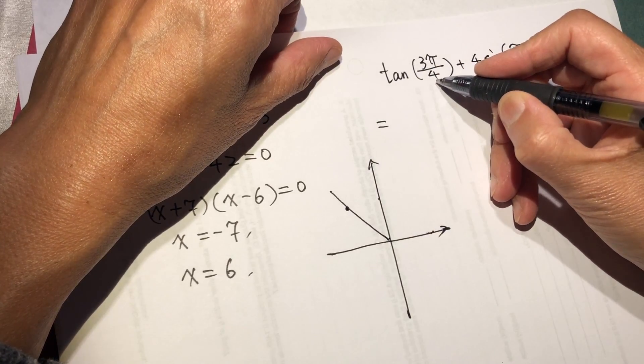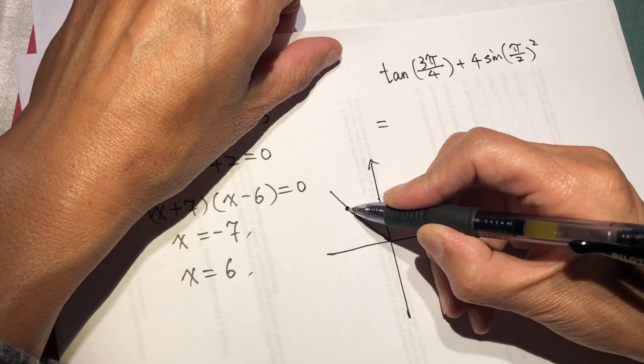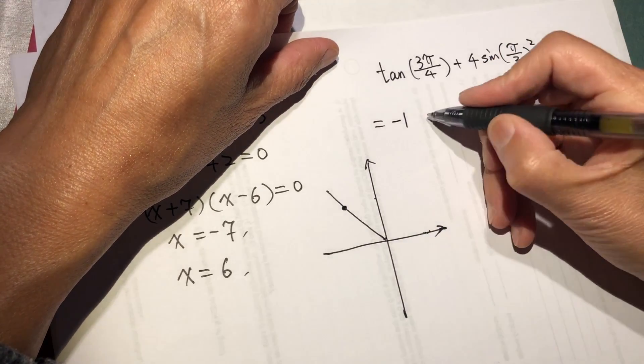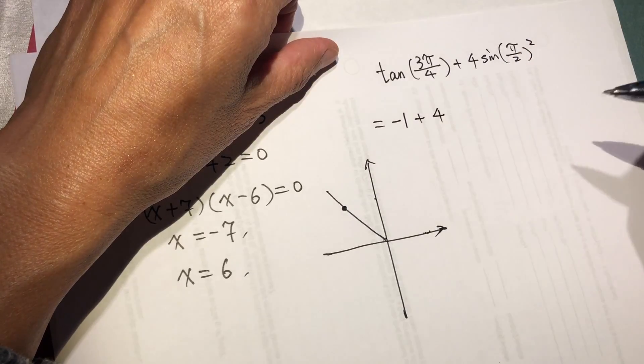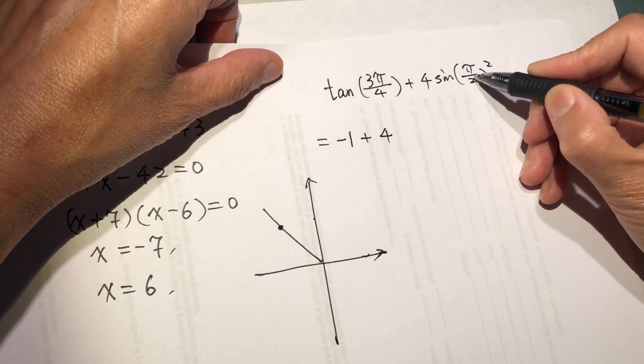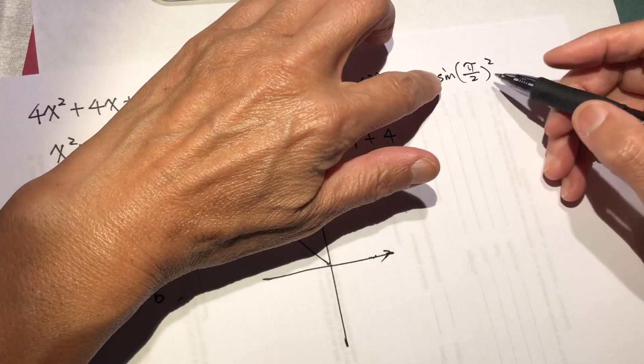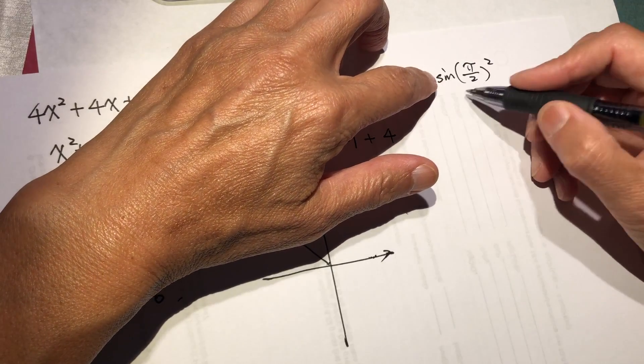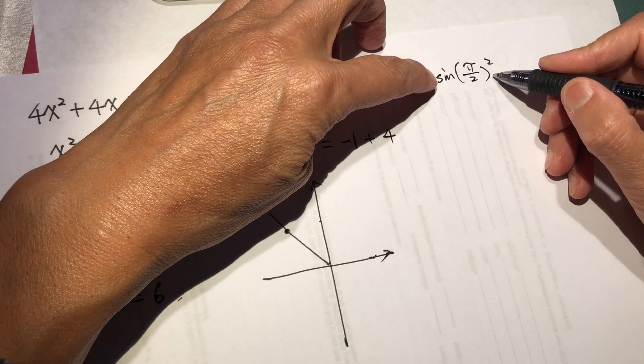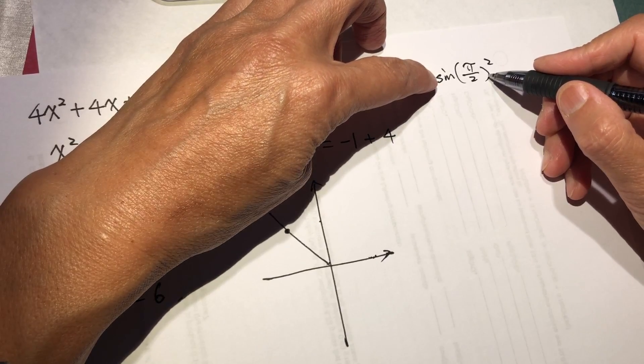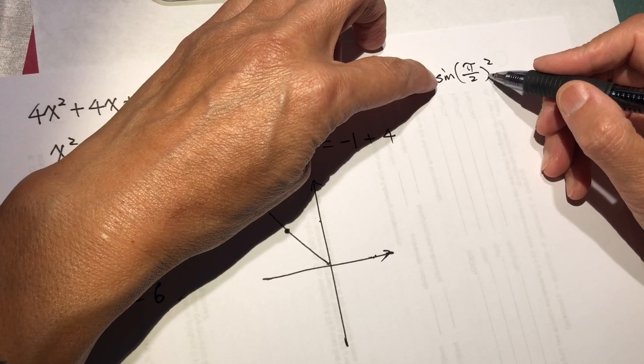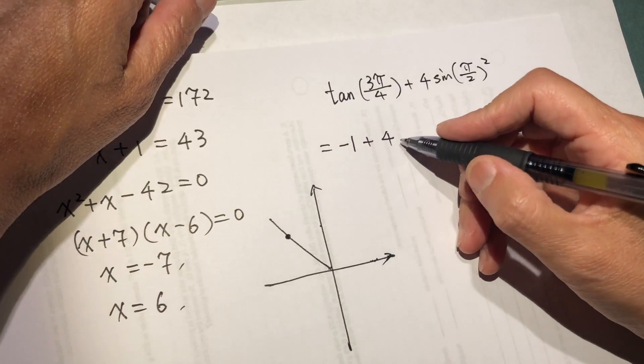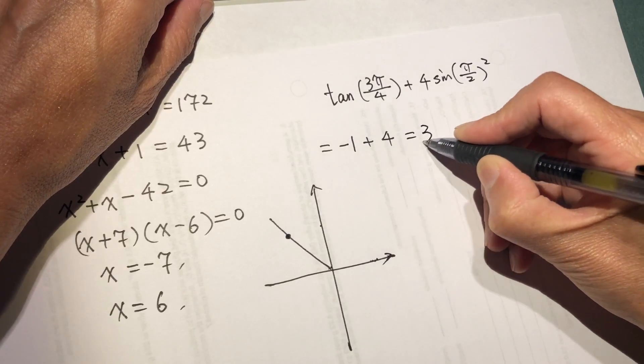Tangent of 3 pi over 4 is negative 1 plus 4 times sine pi over 2, sine pi over 2 squared. Sine pi over 2 is 90 degrees, so negative 1 plus 4 equal to 3.